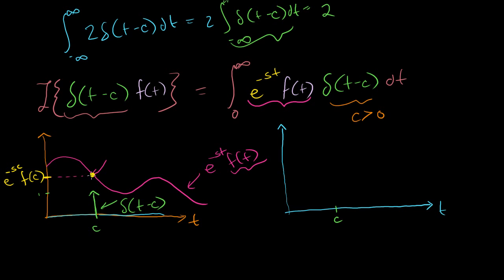So if you take this point — which is just some number, it could be 5 — 5 times the Dirac delta function. In this case it's not 5, it's this more abstract thing: e to the minus sc times f of c. When I multiply this thing times my little delta function there, I essentially get e to the minus sc times f of c times delta of t minus c. This might look like some fancy function, but it's just a number when we consider it in terms of t — from t's point of view, it's just a constant.